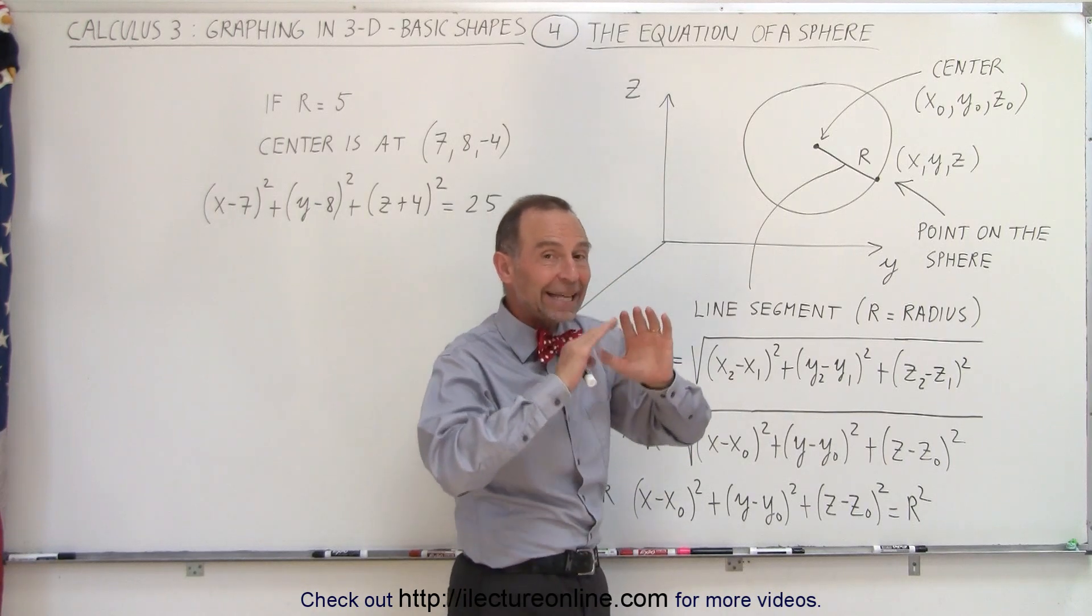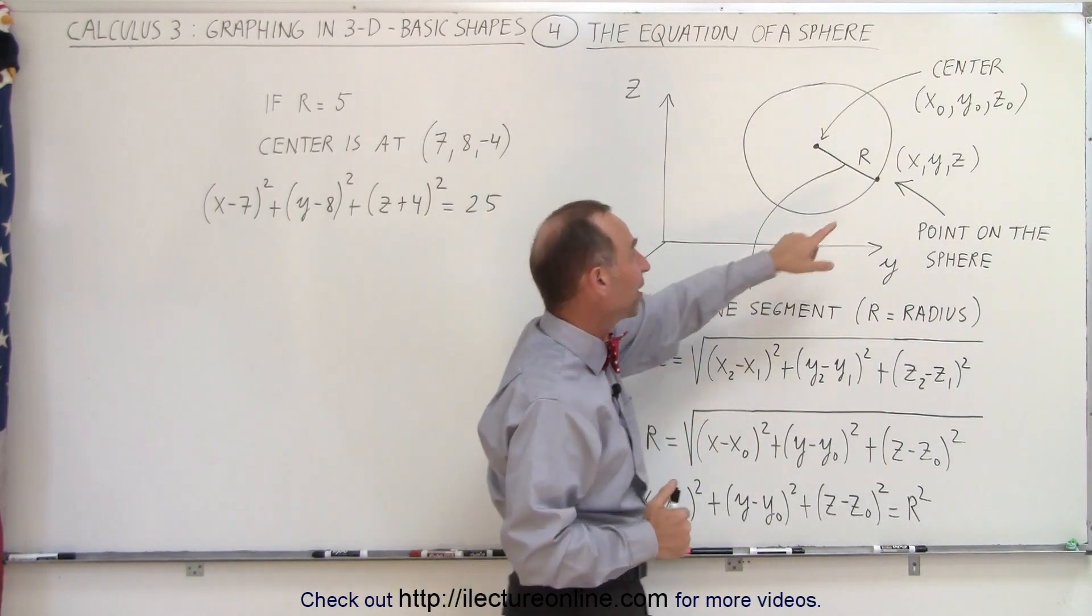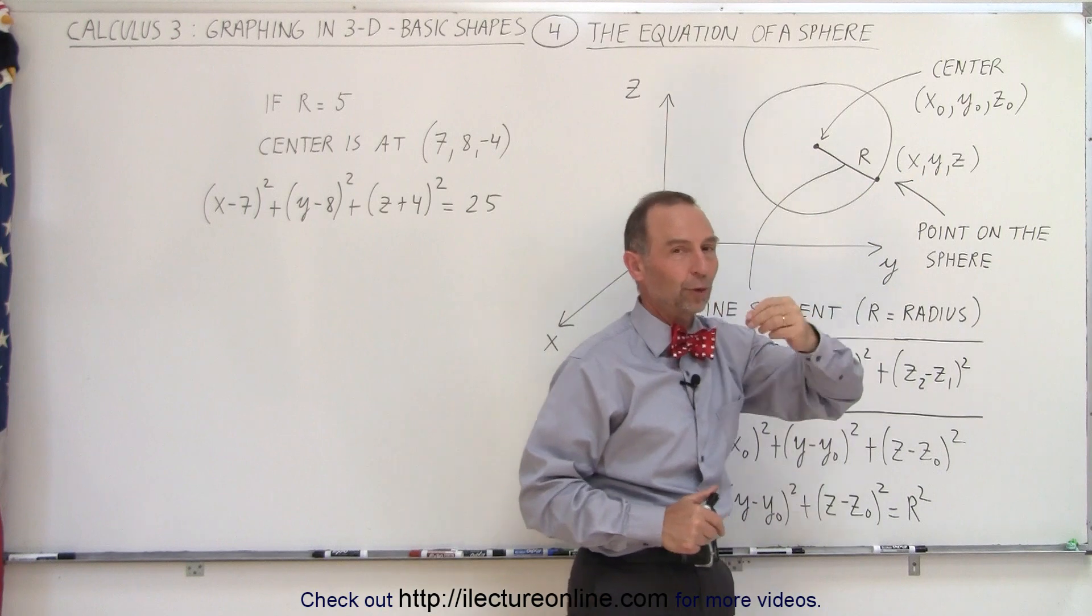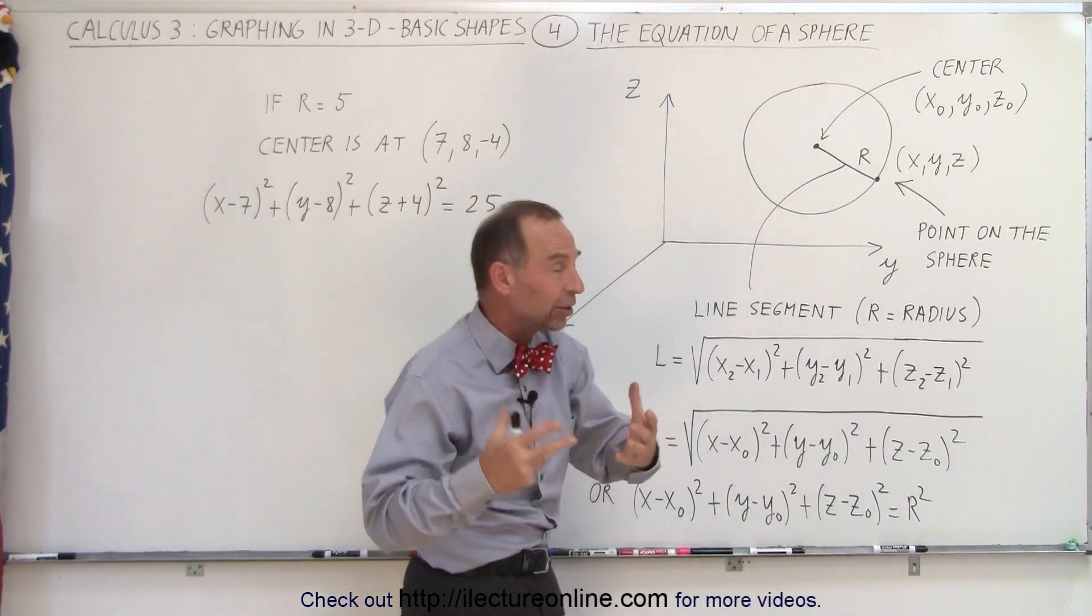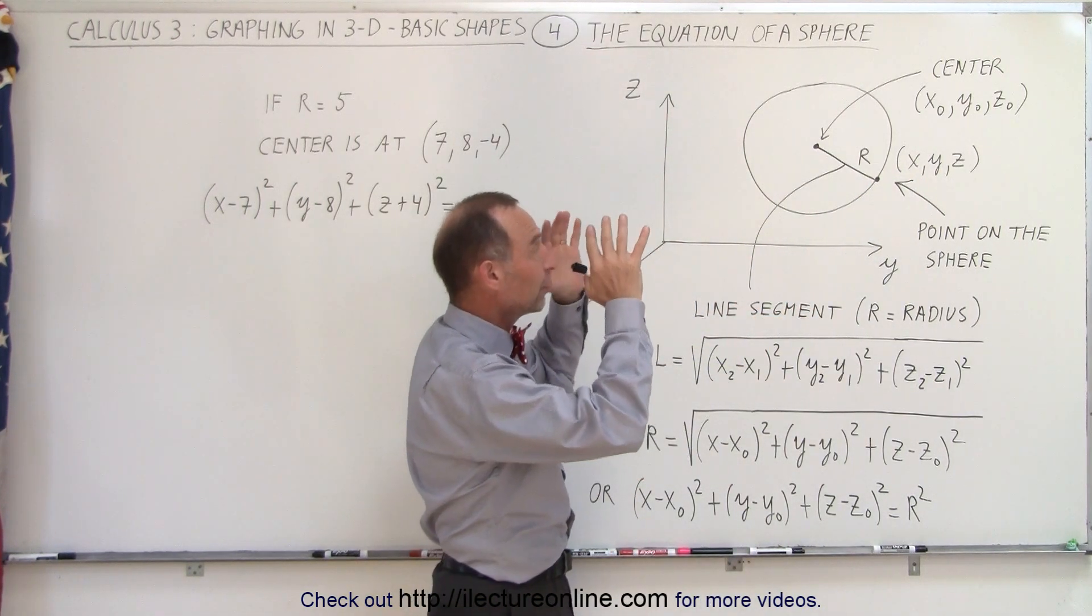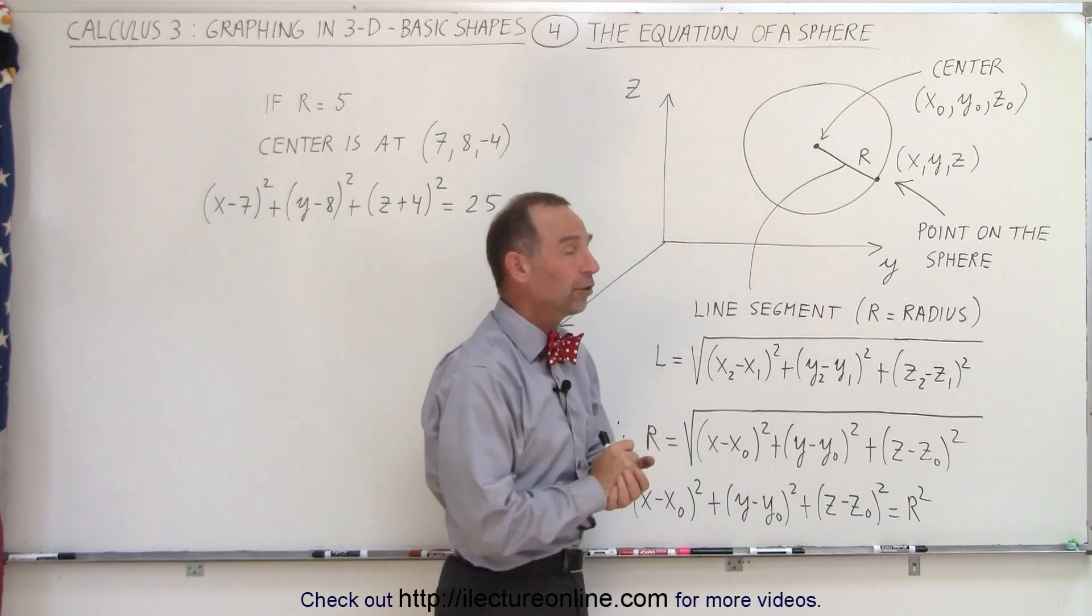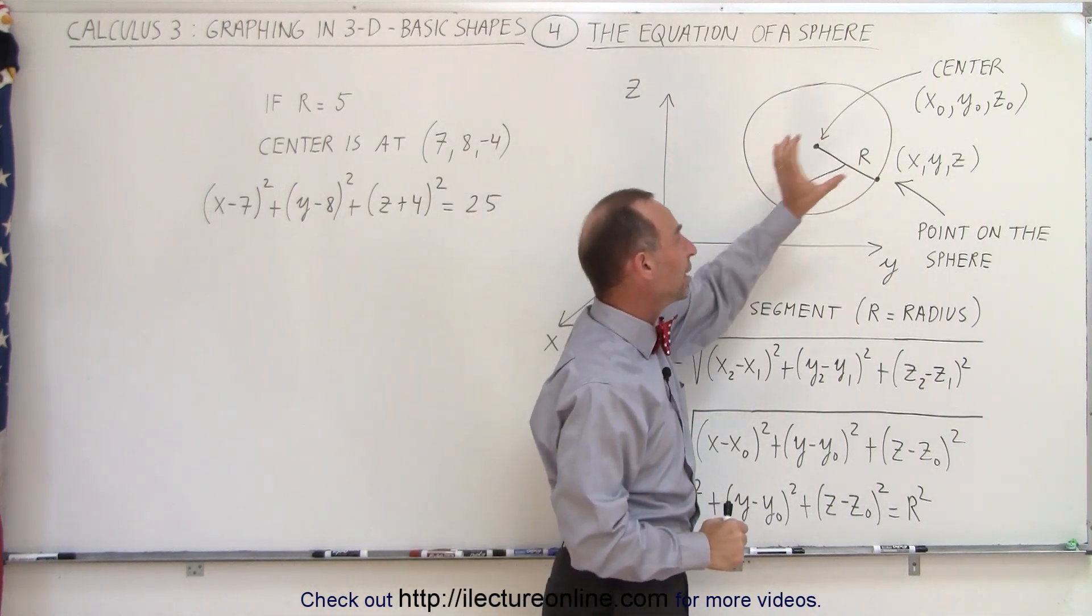And then let's define any point on the sphere as having coordinates x, y, and z, where of course x, y, and z can take on any values as long as those values place it right on the surface of the sphere. R would be the radius of the sphere.